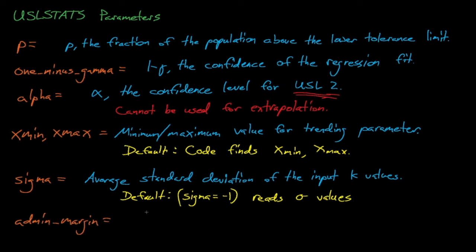The admin_margin parameter describes the administrative margin for our upper subcritical limit. If we have a delta k AOA that's specified for our application, then we can also add it into this parameter.